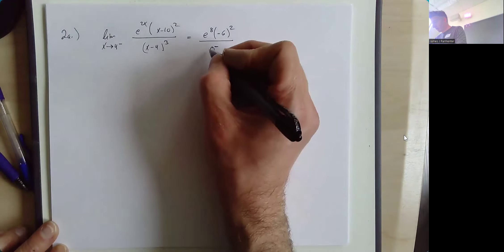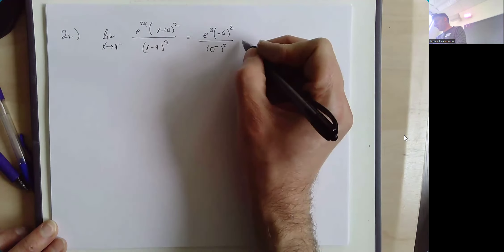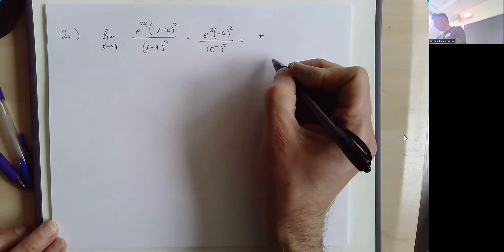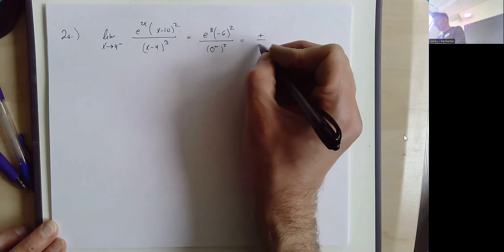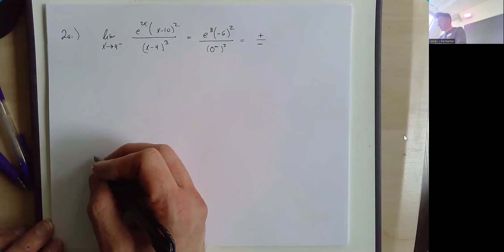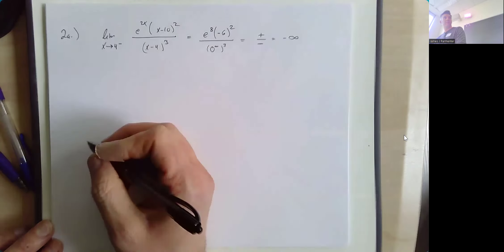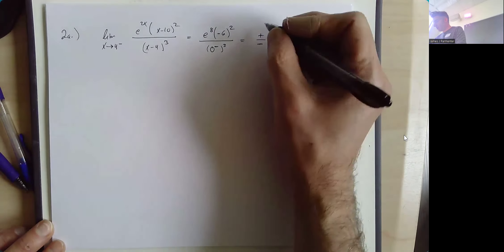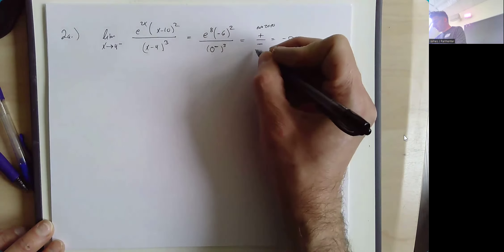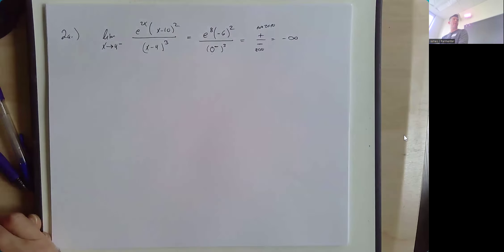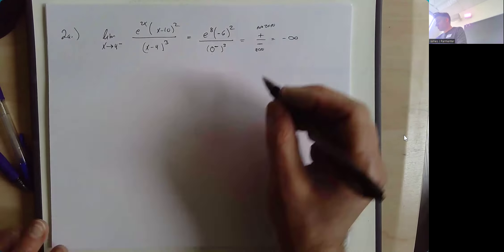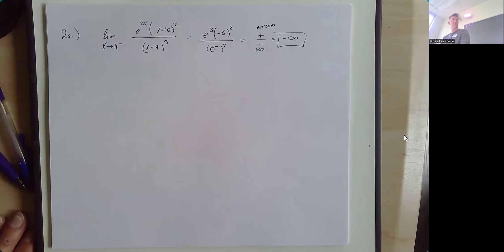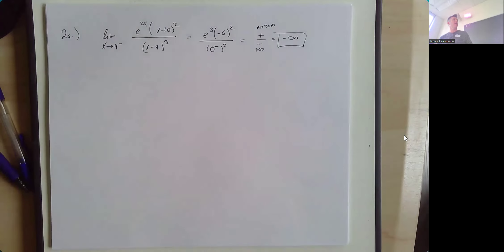We're approaching 4 from the left — we're a little smaller than 4, subtracting 4 gives us a slightly negative number — and then we're cubing it, so a negative number to an odd power stays negative. The top is positive and the denominator is negative, so positive over negative gives us negative infinity. When you have a non-zero on top and a zero on the bottom, it depends on the overall sign. Our overall sign is negative, so we get negatively infinitely large.